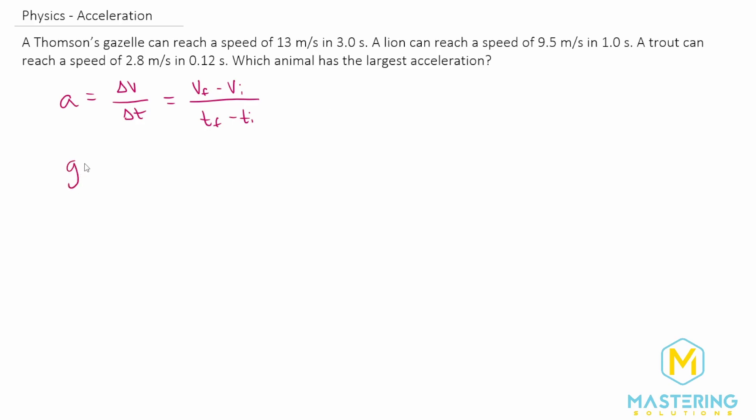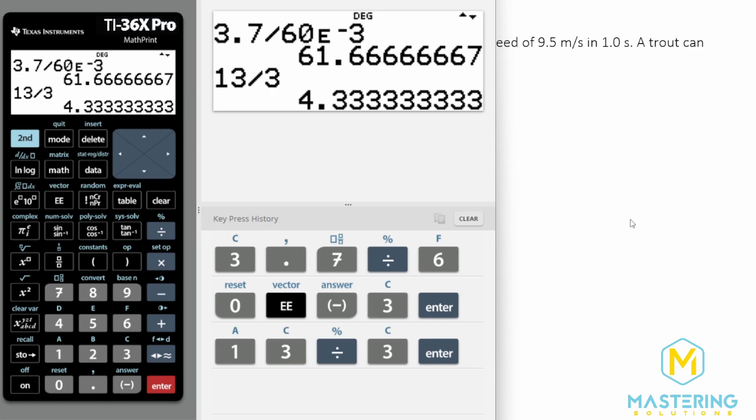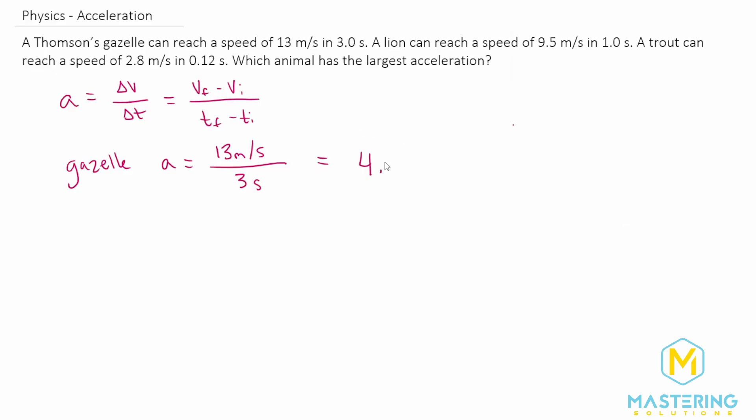For the gazelle, the acceleration will be the change in velocity, which is 13 meters per second, divided by the change in time, which is 3 seconds. The units will be meters per second per second, or meters per second squared, which is what we need. Plugging that in, we have 13 divided by 3, which gives us 4.3 meters per second squared.